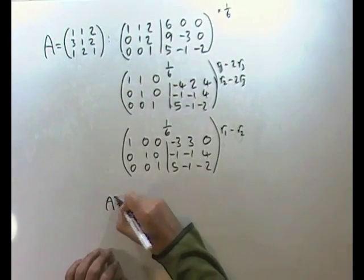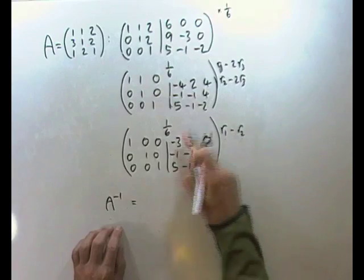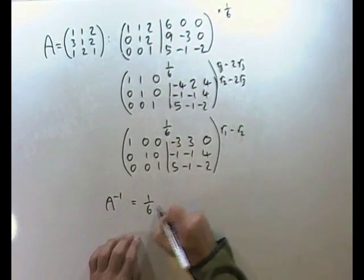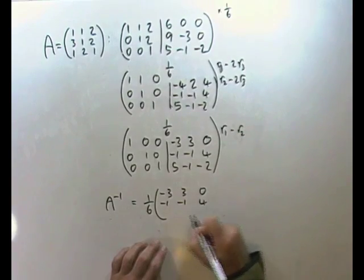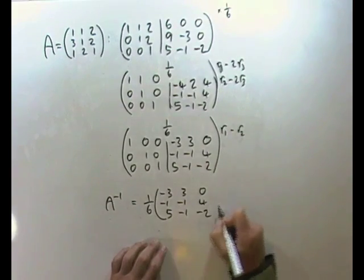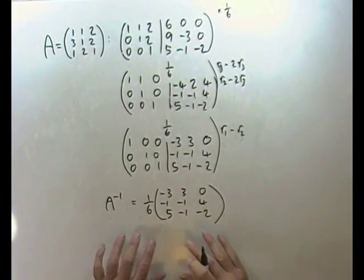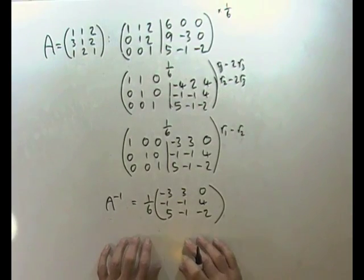Meaning that the inverse of matrix A should hopefully be this. It should be one sixth of negative three, three, zero, negative one, negative one, four, five, negative one, negative two. Now, last thing that remains then is just to check if that's correct.